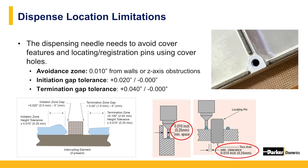Sierra and I wanted to touch on a few limitations of dispense. The dispense needle — the point from which the material is dispensed — needs to avoid all cover features and locating or registration pins using cover holes. We call this the avoidance zone, and generally it can be about ten thousandths in from the wall or a z-axis obstruction. There are also initiation gap tolerances and termination gap tolerances to watch out for. The initiation gap is the distance between where a bead starts and an interrupting feature, while the termination zone is the distance between where the bead ends and any bolt hole, housing wall, or material standoff. Beyond these limits, gasket design bead path is simple — if you can get there, you can dispense there.